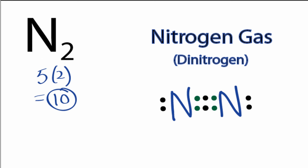So that's it. We used a triple bond to give octets to both of the nitrogens and still use 10 valence electrons.